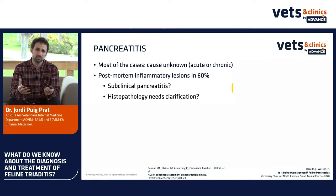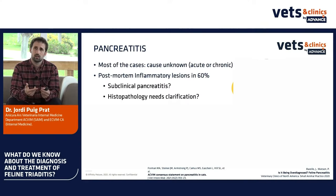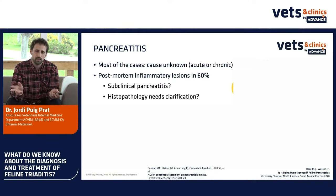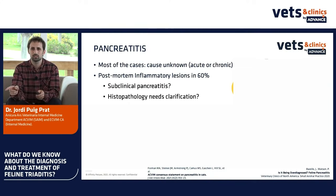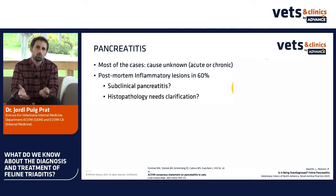Studies show that up to 60% of cats in post-mortem studies had inflammatory lesions in the pancreas. This raises two questions: maybe we have subclinical pancreatitis in healthy cats, or maybe we need to change what we consider abnormal in the pancreas — perhaps some degree of inflammation as they get old is normal, and we cannot call them true pancreatitis cats.